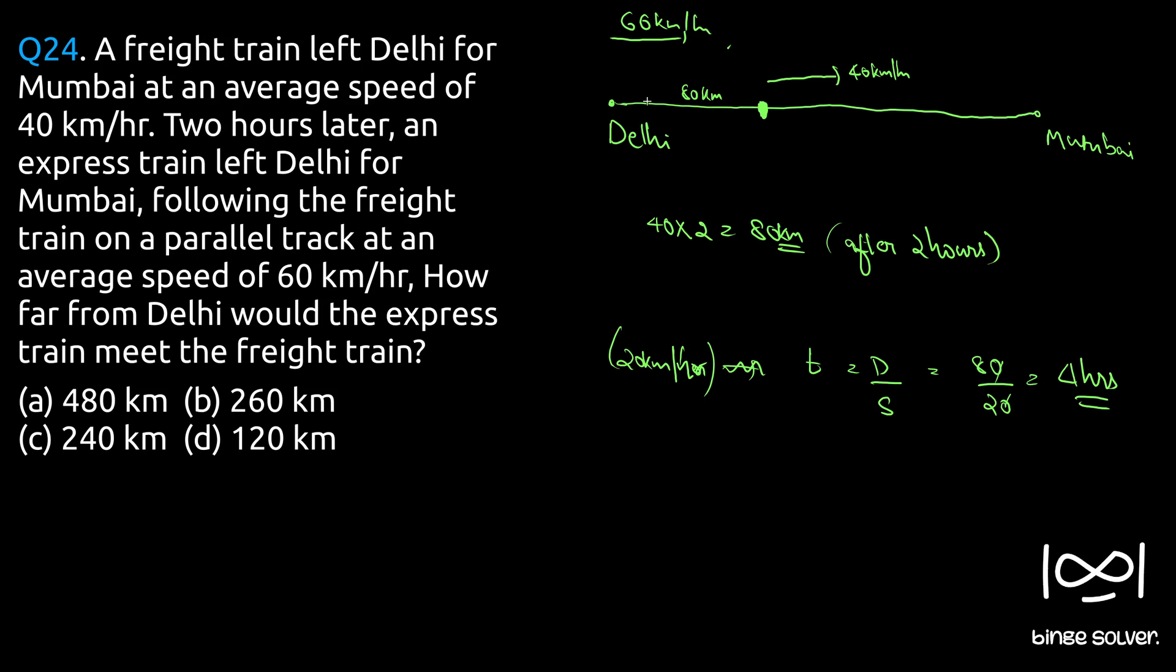So this train from this point when the freight train is at 80 km apart will take further four hours to catch up. So further four hours means this train from here has traveled four hours with a speed of 60 km, so total distance it has actually moved will be 60 times 4, that is 240 km.